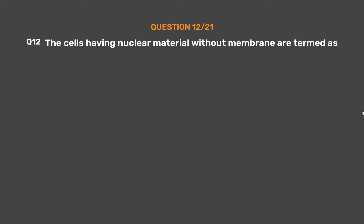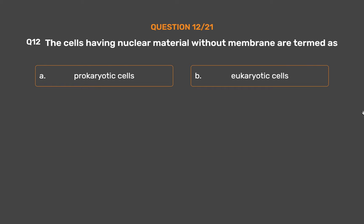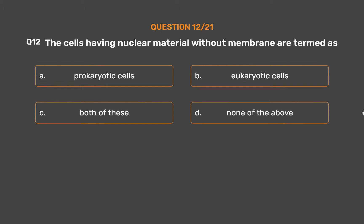Question No. 12: The cells having nuclear material without membrane are termed as. Option A: Prokaryotic cells. Option B: Eukaryotic cells. Option C: Both of these. Option D: None of the above.